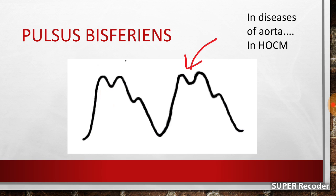In hypertrophic obstructive cardiomyopathy (HOCM), initially there is an upstroke during cardiac systole, but at mid-systole, the hypertrophied septum obstructs the aortic outflow, causing a notch due to decreased blood flow. So the two causes of pulsus bisferens are severe aortic regurgitation and HOCM. This condition can also be seen when aortic stenosis is associated with aortic regurgitation.